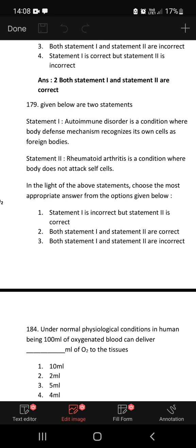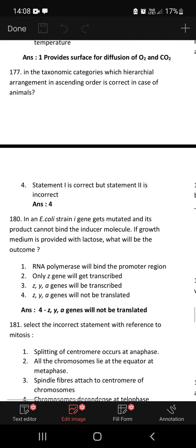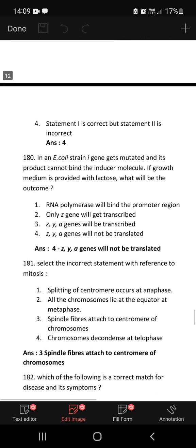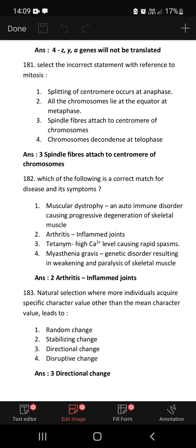179: Autoimmune disorder is a condition where body's defense mechanism recognizes its own cells as foreign bodies. Rheumatoid arthritis is a condition where body does not attack self-cells. So statement 1 is correct but statement 2 is incorrect. In an E. coli strain, I gene gets mutated and its product cannot bind the inducer molecule. If growth medium is provided with lactose, what will be the outcome? It binds with the repressor protein. Because of mutation, the structural genes will not be translated even though the lactose is binding to the promoter protein. ZYA genes will not be translated. That is, the structural genes will not be translated, so there is no synthesis of beta-galactosidase, beta-galactoside permease, and beta-galactoside transacetylase.